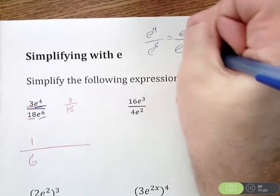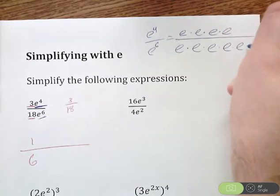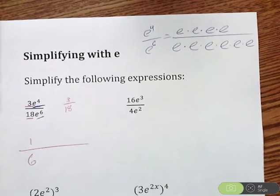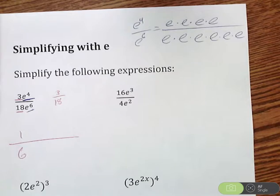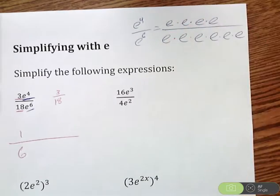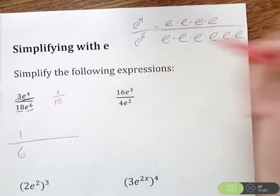On bottom e to the 6th. 1, 2, 3, 4, 5, 6. Now what we can do is we can cancel out like terms. Because e divided by e, when you divide common terms like that, that's 1. So they're gone.